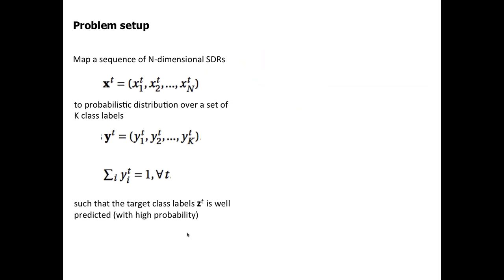Here is the setup of the SDR classification problem. The goal is to map a sequence of high-dimensional SDRs, labeled as x, where t is time, to a distribution over a set of k classes. This output of the classifier changes over time, and since it's a predictive distribution, it should sum to one at any time point. The goal is to have high prediction probability for the true class label z.